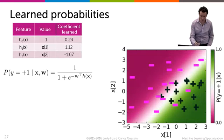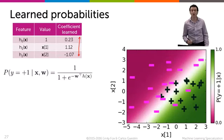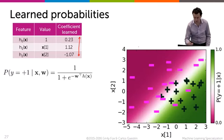This is the same dataset and the same learned model from a few slides ago, and what I'm plotting here on the right is not just the decision boundary, but it's the probability that y hat is equal to plus 1. So it's a probability plot.